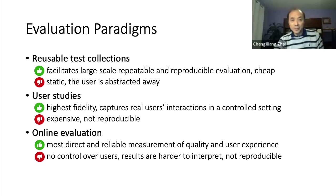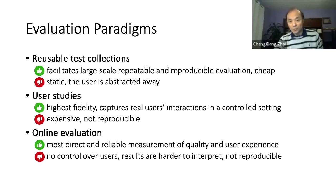The third paradigm is online evaluation. This is perhaps the most direct and reliable measurement of quality and user experience while users are performing a real task. The downside is that there is no control over such users, and the results are therefore harder to interpret.